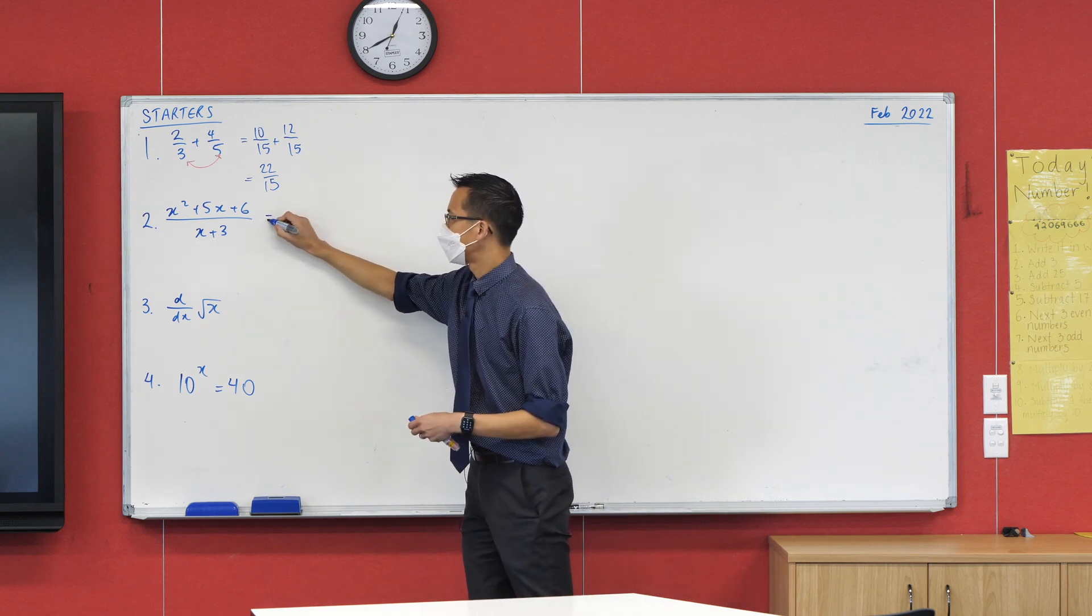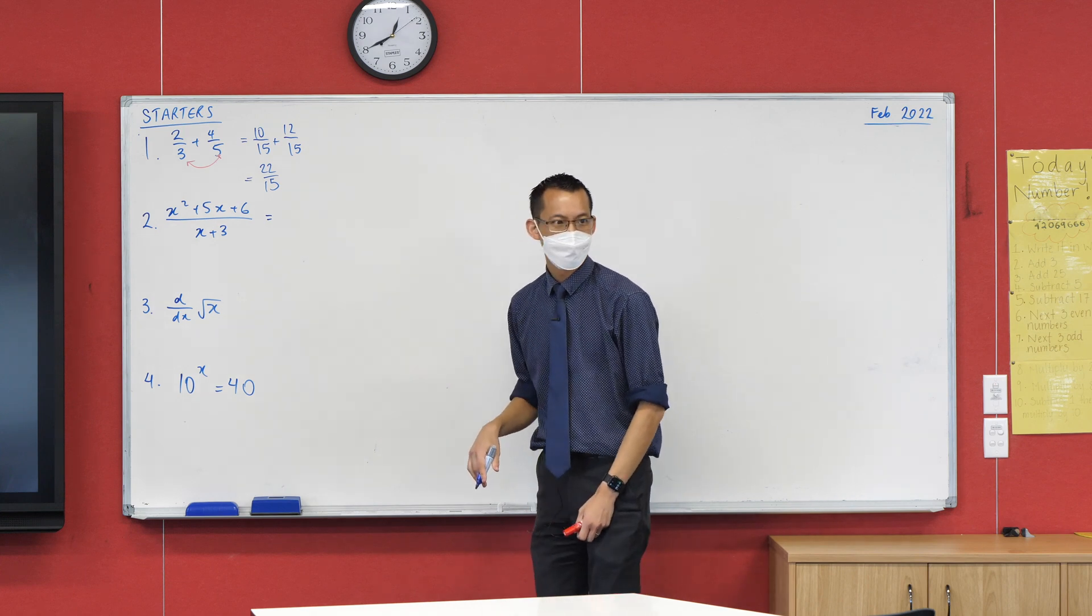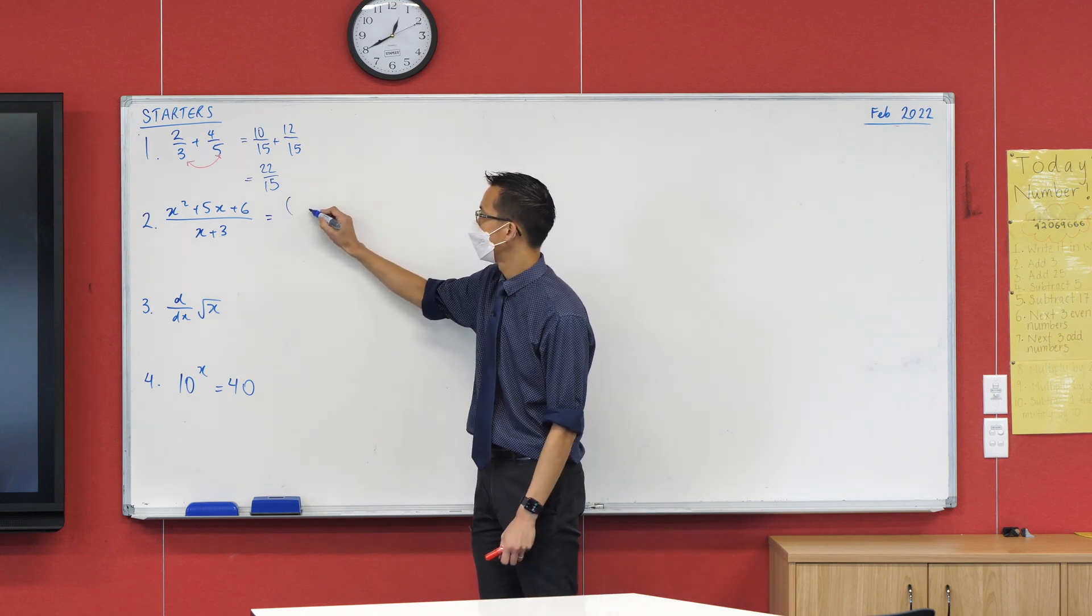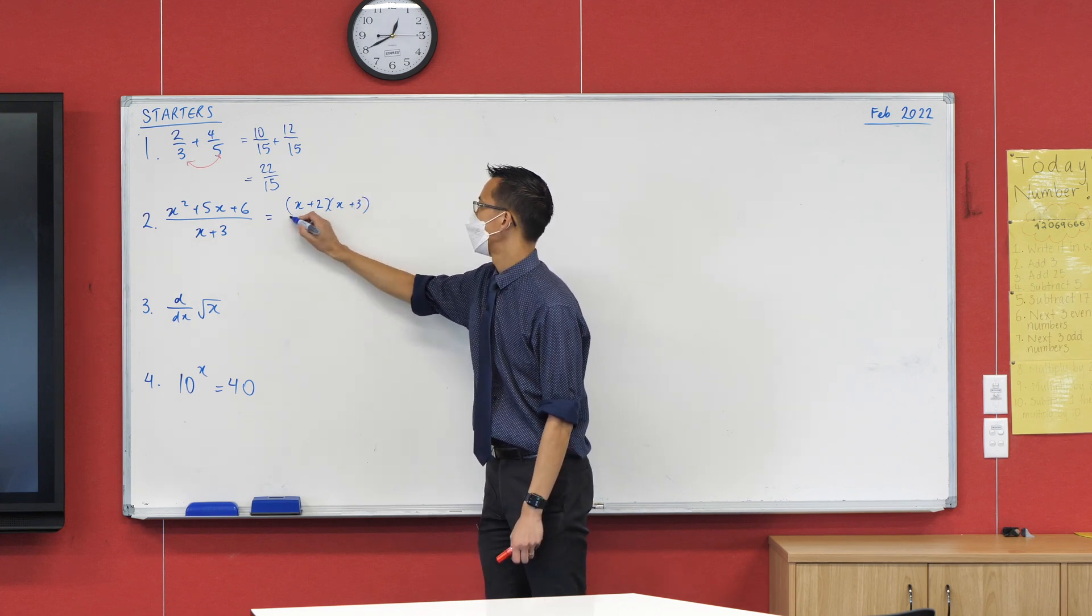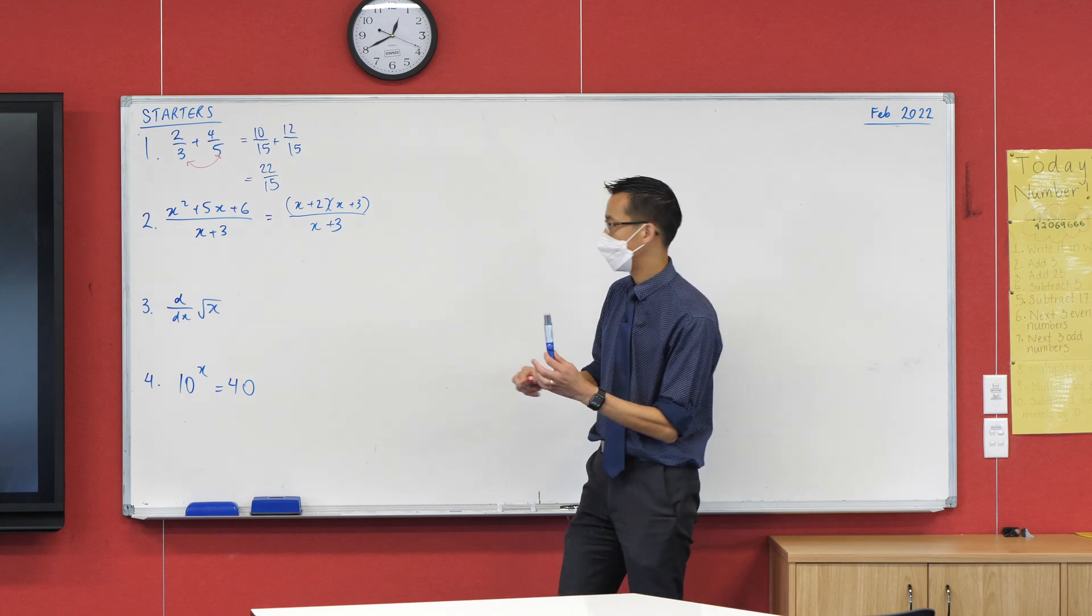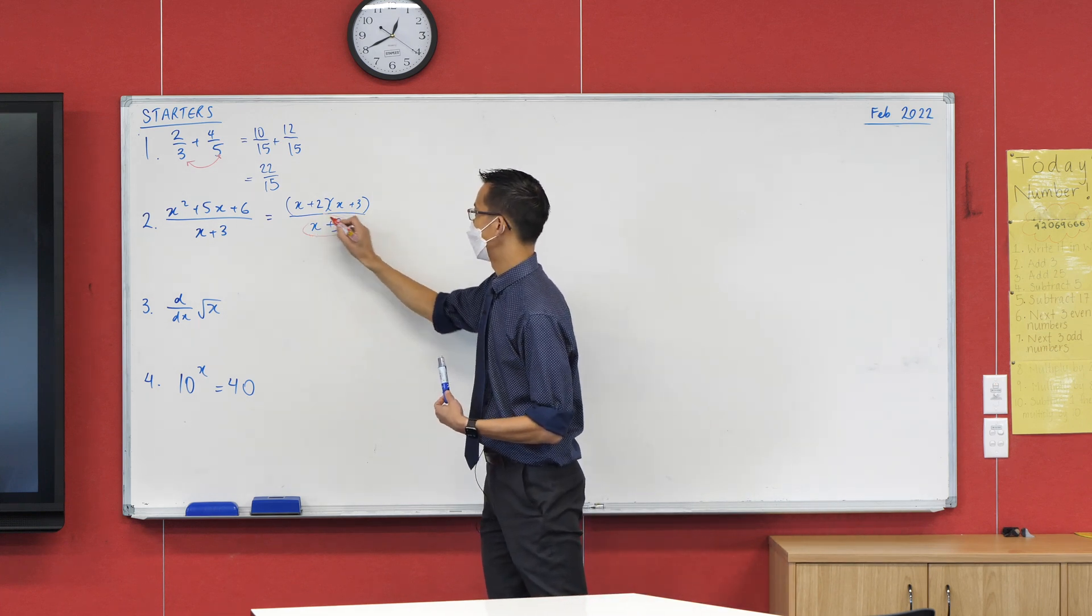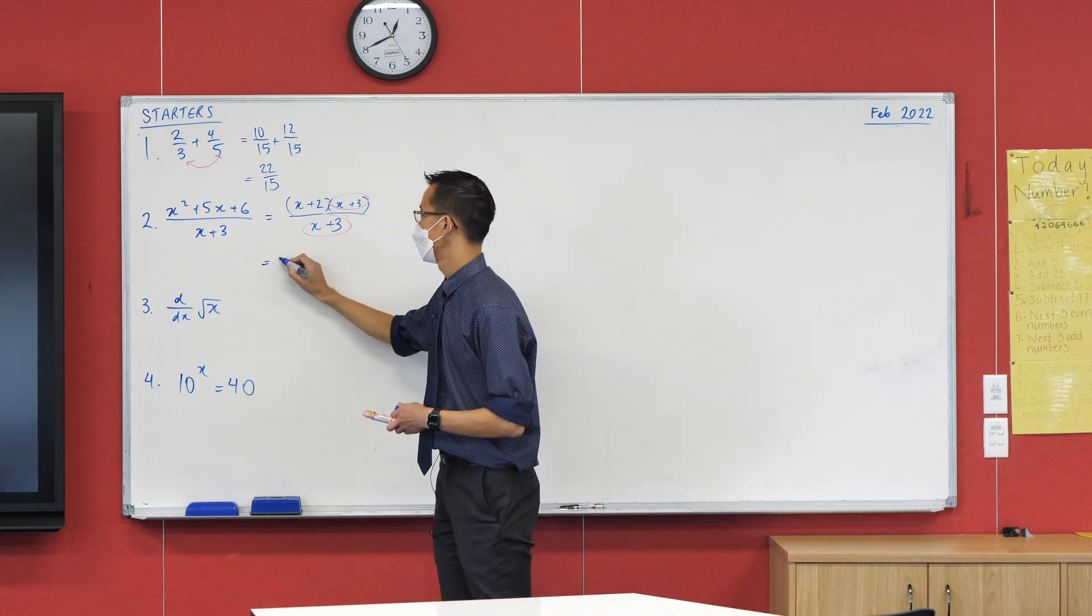Now this one here, I think, remember, I asked you to simplify it. What did you do to help simplify it? Uh-huh. And what do you get? Yep. Wonderful. Okay. And then you're like, oh, great. I can actually just cancel because this is on the denominator and the numerator. So then you just get a very simple answer, which is x plus 2.